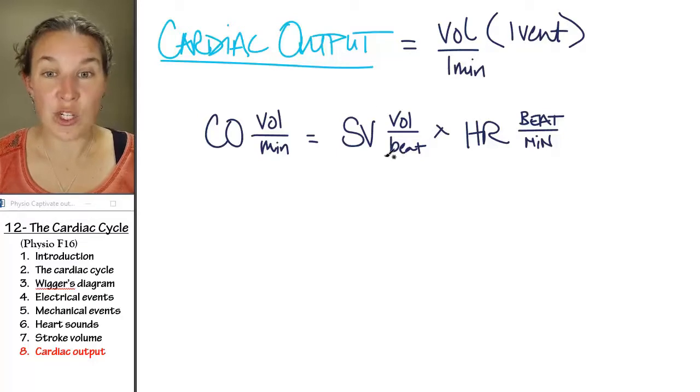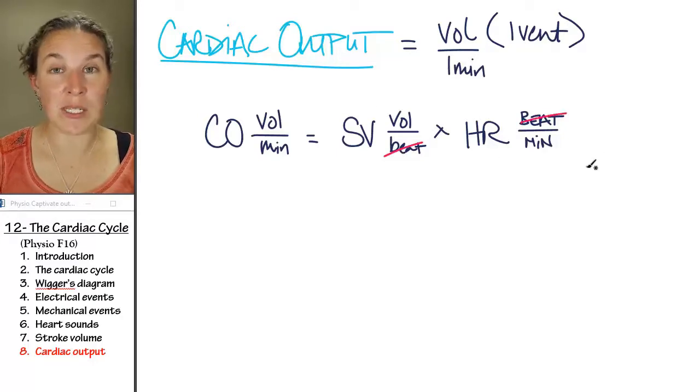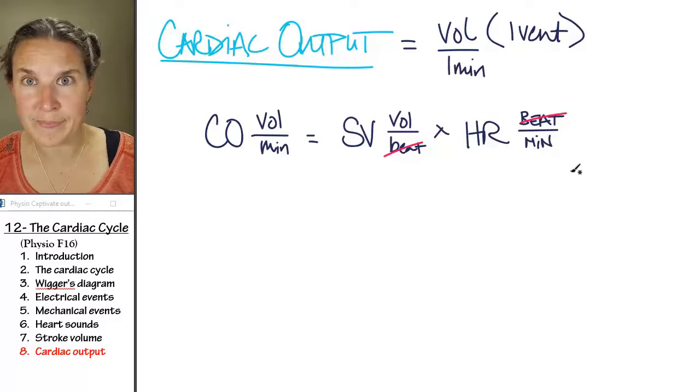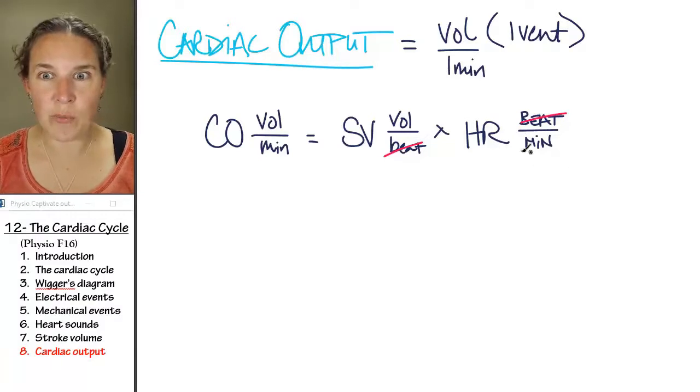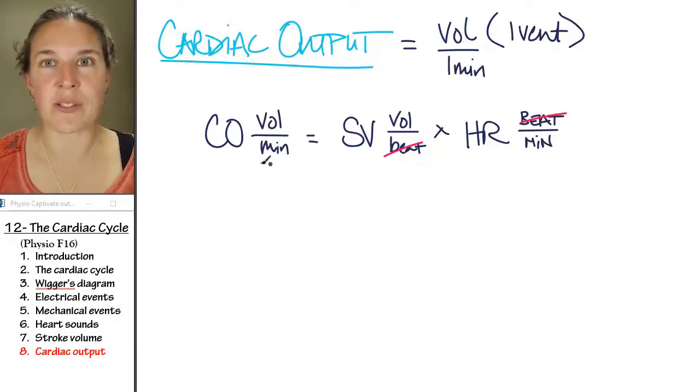You can cancel out your beats because if you divide beats by beats, you get one, and you end up with volume per minute, which is your units of cardiac output.